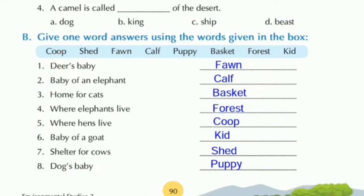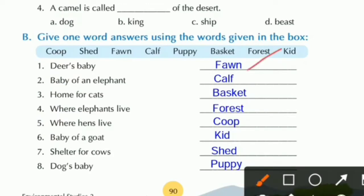Number two: Baby of an elephant is calf, C-A-L-F. Number three: Home for cats is basket, B-A-S-K-E-T. Number four: Where elephants live — elephants live in a forest, F-O-R-E-S-T.